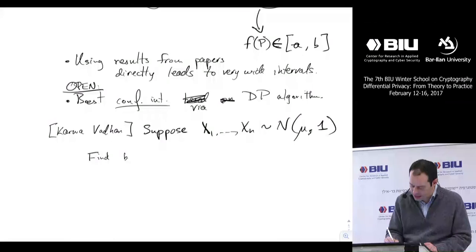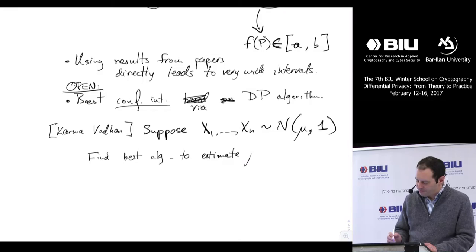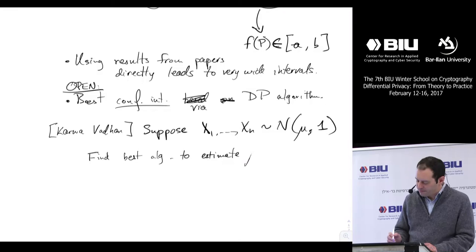What kinds of asymptotic distributional statements can we make for private multiplicative weights and other complex differentially private algorithms?